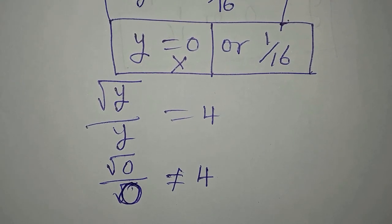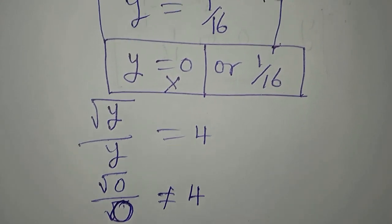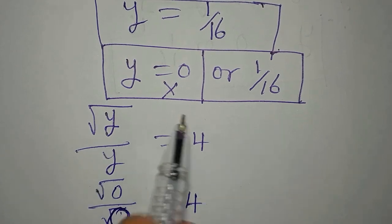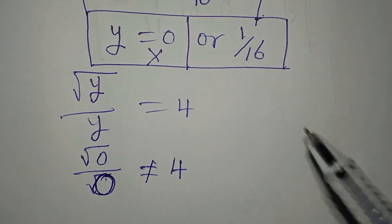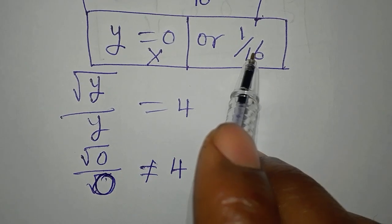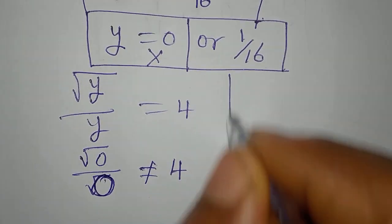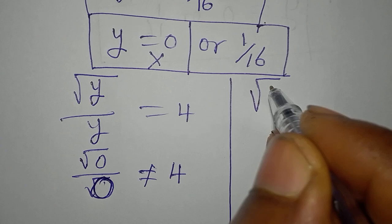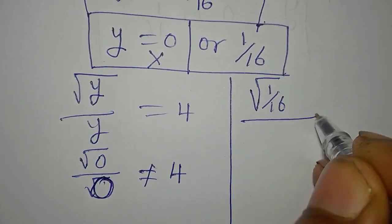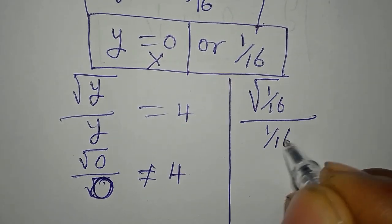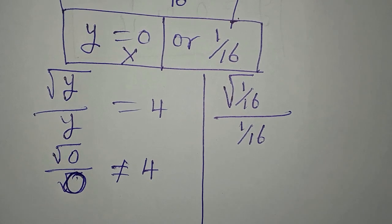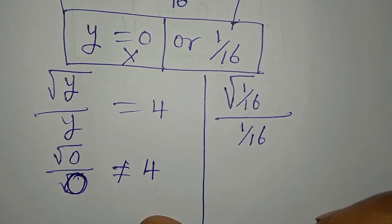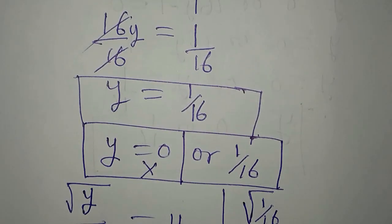Okay, and this means that our first method gave us a value which is not needed. Take note of that. Now let's put in the second value which is 1 over 16. So we have square root of 1 over 16, over 1 over 16. Do you think this will give us 4?